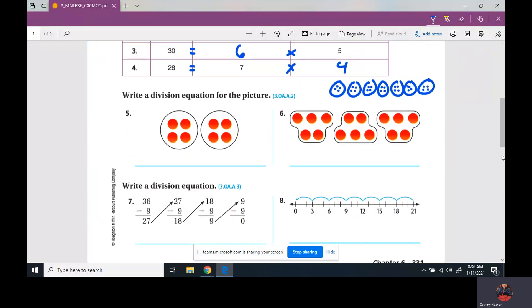So write a division problem for this. Well, we have eight counters and we have two equal groups, so there's four in each group. Or it could be eight counters - that always has to be the first number - with four in each group, and we have two equal groups. So there's two things we could do. Now we have five, ten, fifteen counters. We have three equal groups, so it equals five. And we have 15 counters with five in each group, and there's three equal groups.